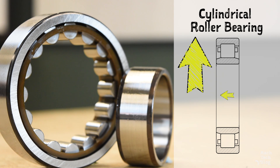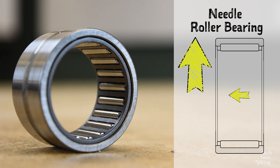The cylindrical roller bearing can support exceptionally high radial loads. However, it has almost no thrust load supporting capacity because rollers are not designed to contact the races on the end faces. Needle roller bearings are similar to cylindrical roller bearings, but their high roller-to-length ratio gives them more load supporting capacity in a smaller package. They are often used when space or weight is an issue.